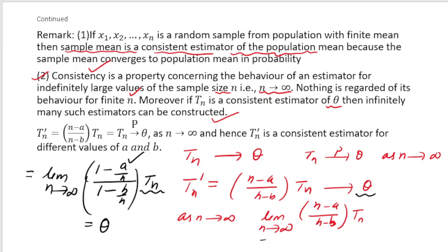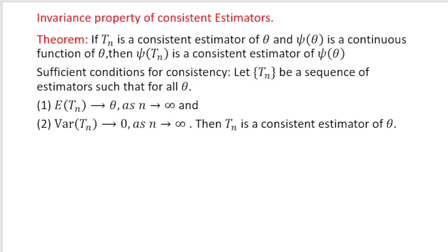They may ask you a multiple choice question: how many consistent estimators are possible? The answer is infinitely many. If we know that Tn is a consistent estimator, with the help of Tn we can generate infinitely many other consistent estimators.